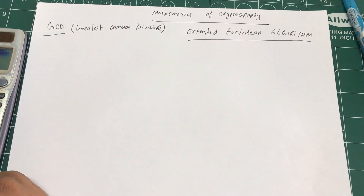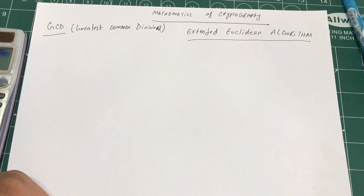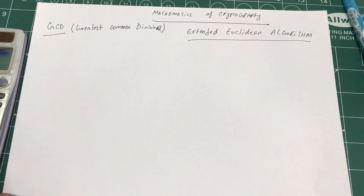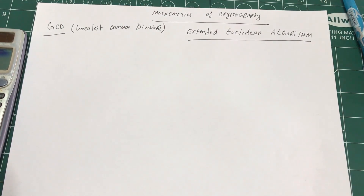This is a very important algorithm used to find GCD, co-prime status, and multiplicative inverses of numbers, which is used in AES and RSA. We'll look at the algorithm first, work out a numerical example, and then move on to an example related to Galois field 2^8, which is used in AES encryption.